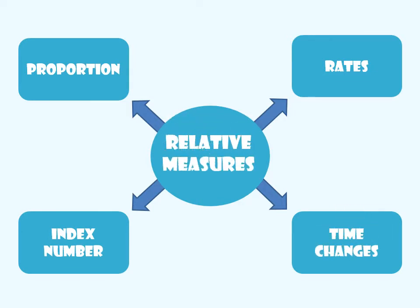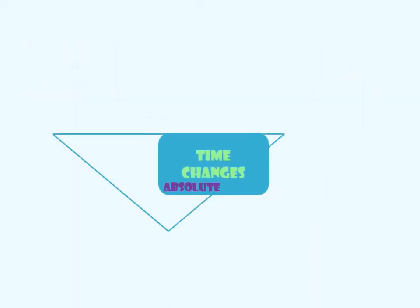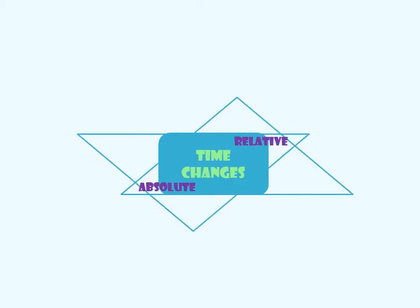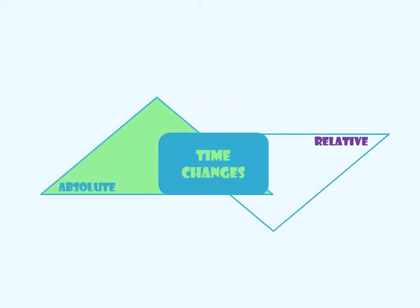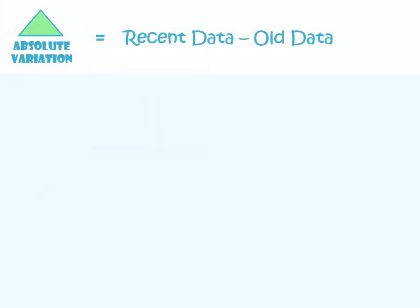Time changes enable us to view the performance of something, measuring it at different points in time. There are two kinds: absolute and relative. First, let's take a look at the absolute ones. We calculate it by subtracting the most recent item of data from the oldest one. We thus obtain the difference between the two periods.